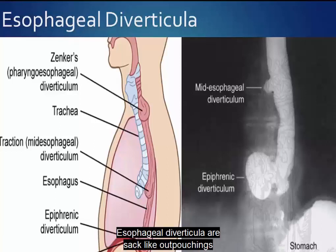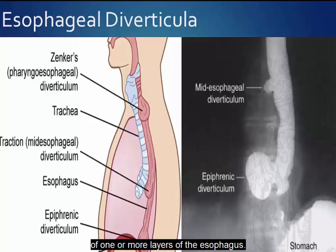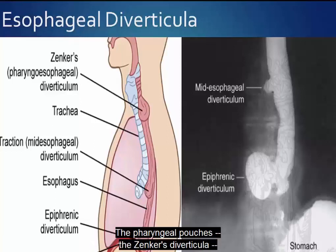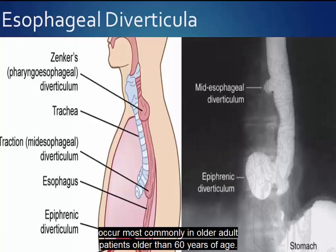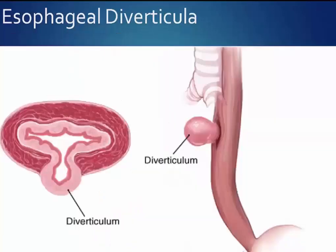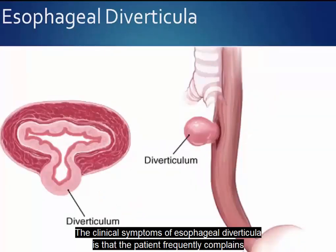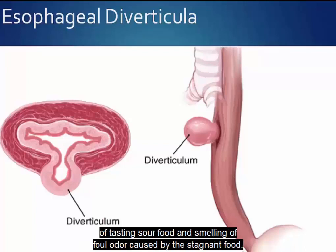Esophageal diverticula are sac-like outpouchings of one or more layers of the esophagus. The pharyngeal pouches, the Zenker's diverticula, occur most commonly in older adult patients older than 60 years of age. The clinical symptoms include the patient frequently complaining of tasting sour food and smelling a foul odor caused by stagnant food.